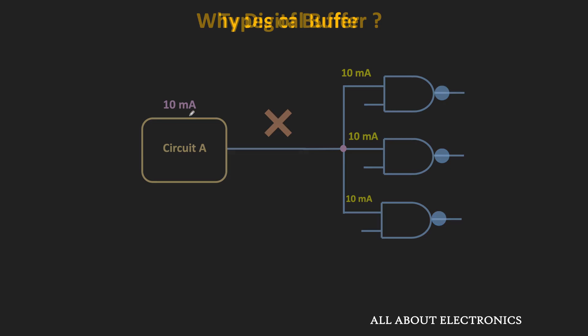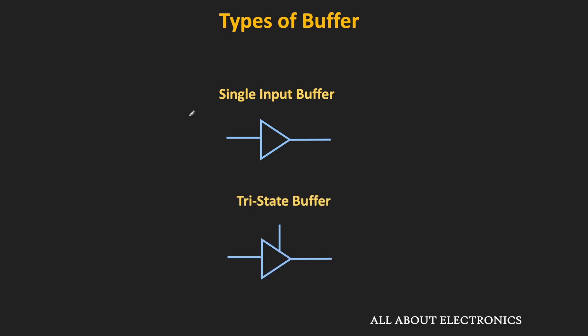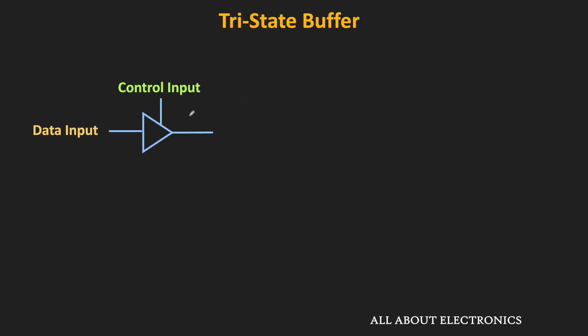The type of buffer we have seen so far is the single input buffer, because it has only one input. But there is another type of buffer which is known as the tri-state buffer. This tri-state buffer has two inputs: one is the data input and the second is the control input. This control input or enable input decides whether the data input will reach to the output side or not.